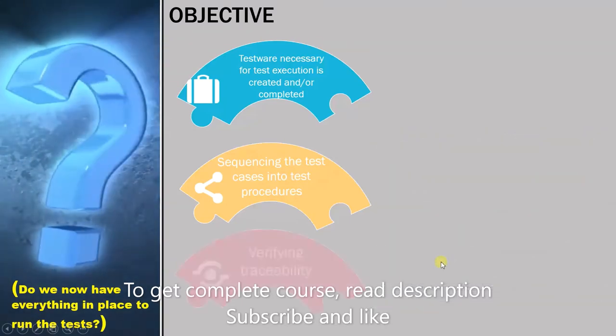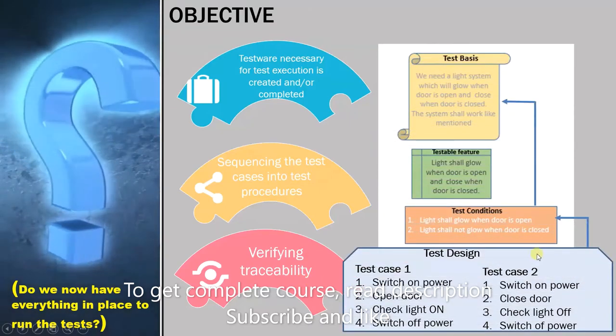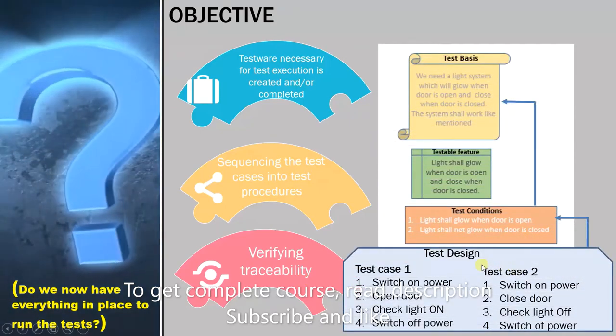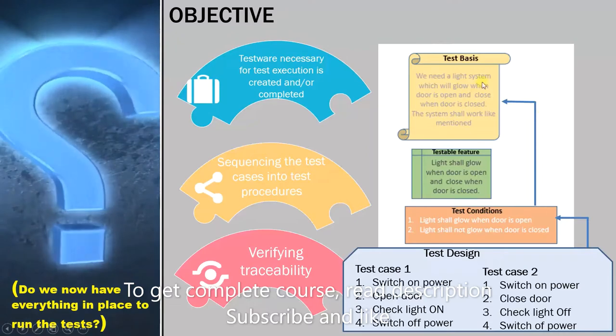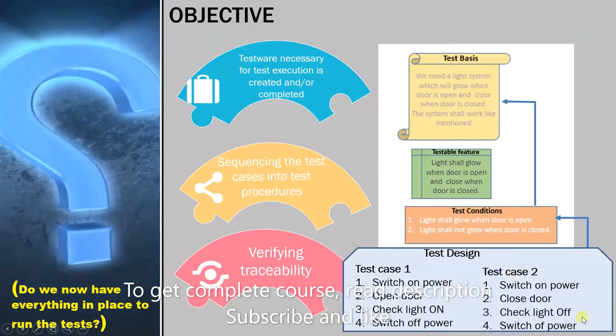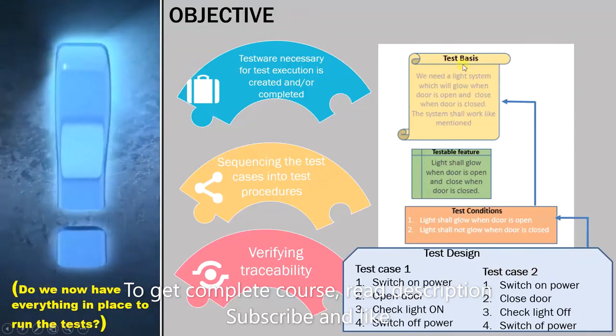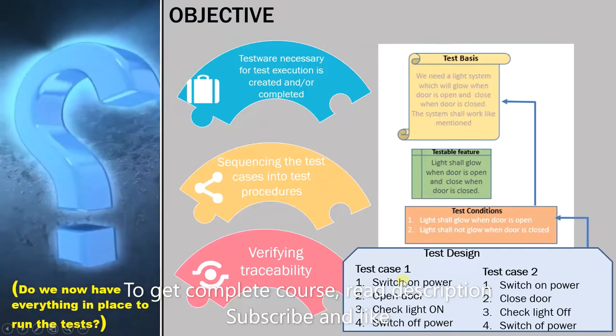Now the next point is verifying traceability. In the implementation stage we have to check the traceability between test design, test condition, and test basis. We are actually just referring to this document in the implementation stage, but along with that we are also verifying other activities completed previously so we can have good quality software.